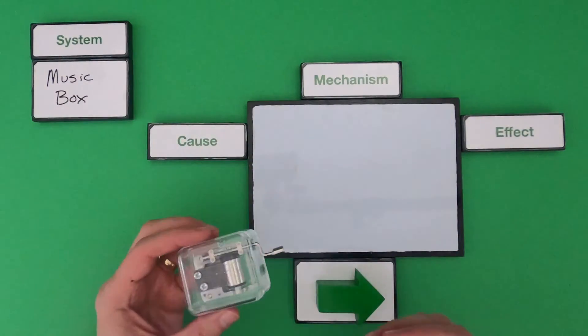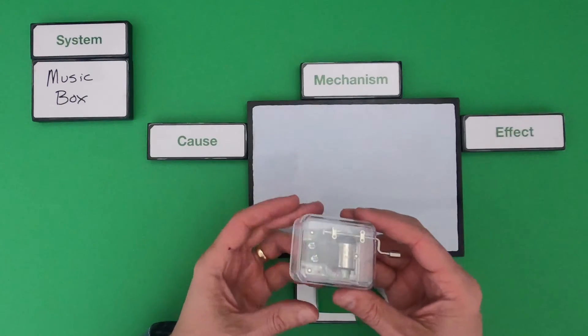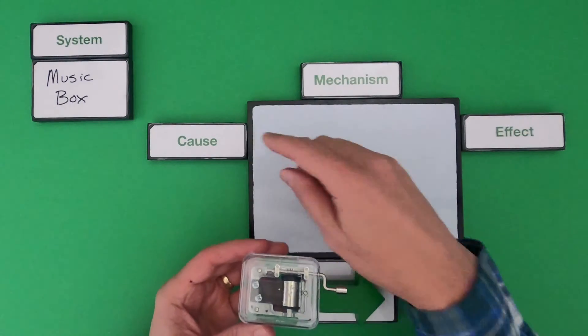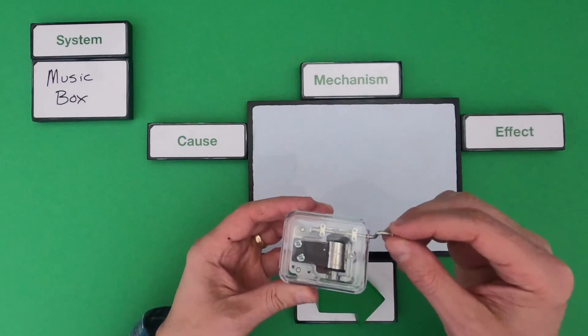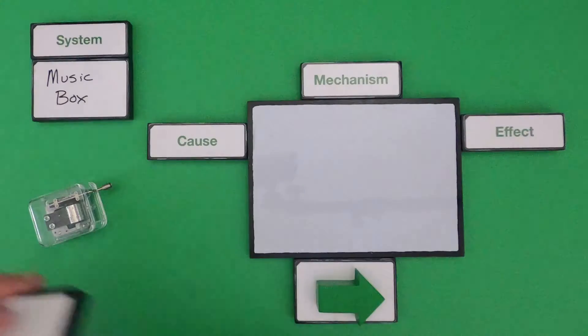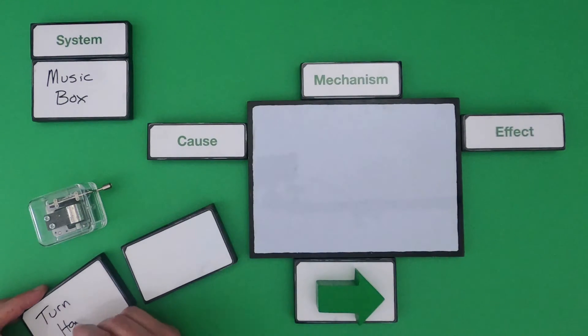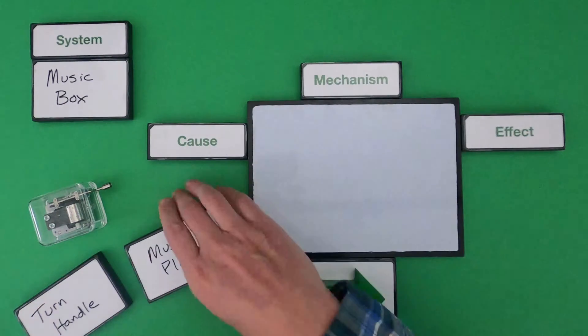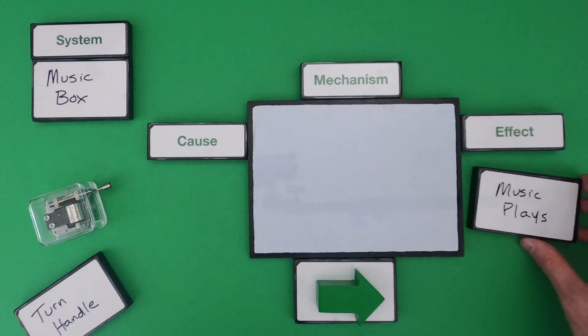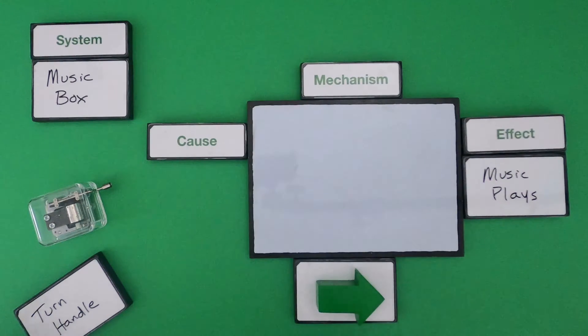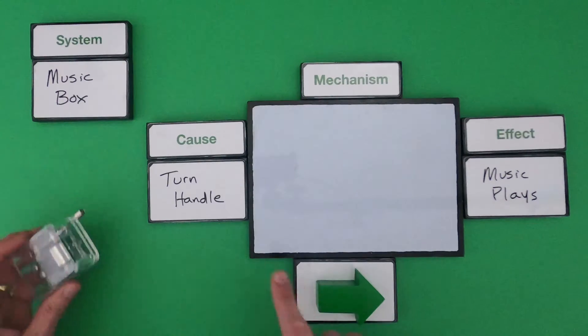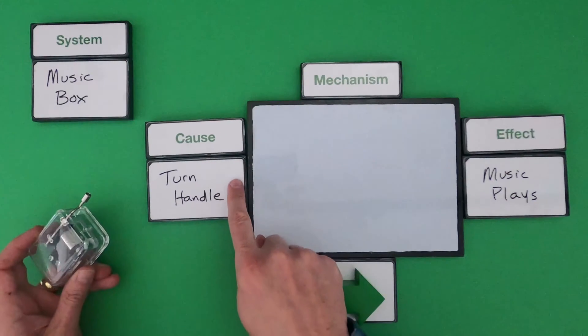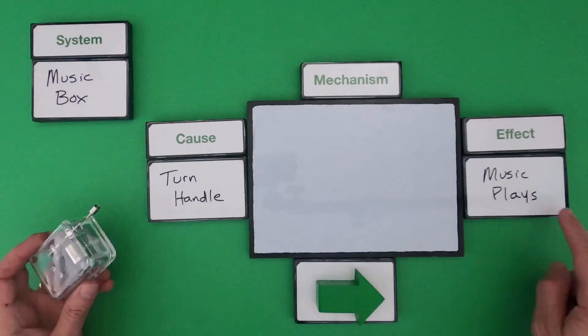So the system is going to be the music box. So the first thing we want to identify is what's the effect and what's the initial cause. So the effect that I'm hearing is the music playing and then the initial cause is me turning the handle. So now we have to figure out how do we go from this initial turning of the handle to the music playing.